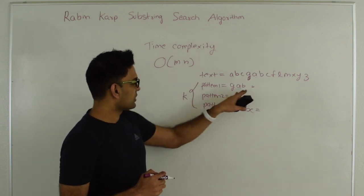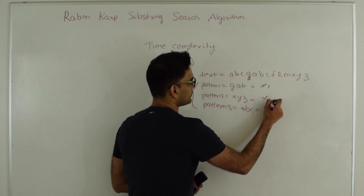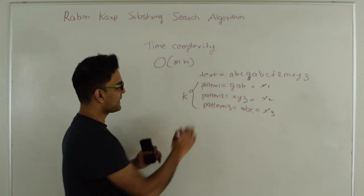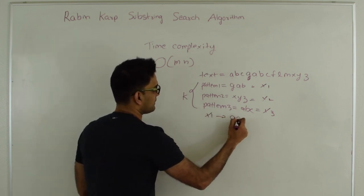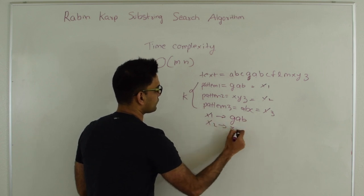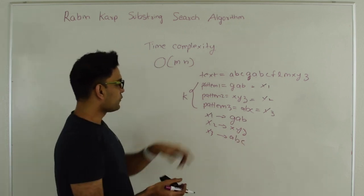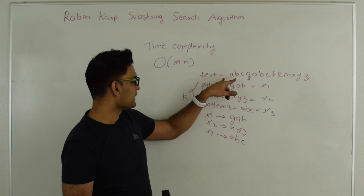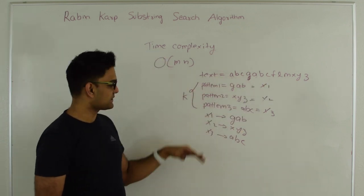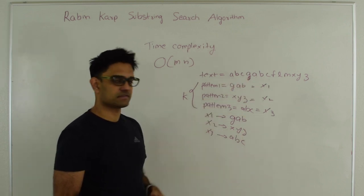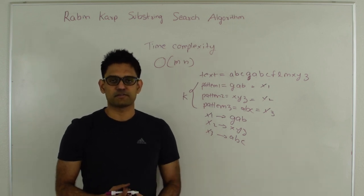Another application is when you have a text and multiple patterns of the same length, and you want to see which patterns exist in the text. You generate the hash of all patterns — say x1, x2, x3 — and put each hash with its corresponding pattern into a map (x1 with 'gab', x2 with 'xyz', x3 with 'abc'). Then you generate hashes of substrings of length M in the original text and check which hash matches one in the map. If there's a match, you compare the actual substring with the pattern. This improves performance significantly.